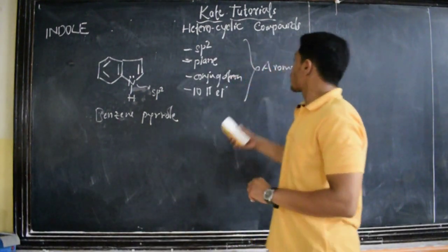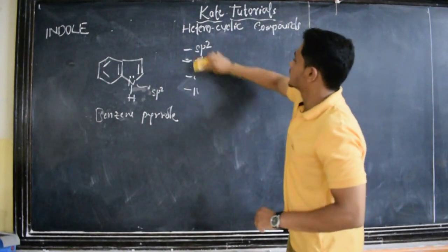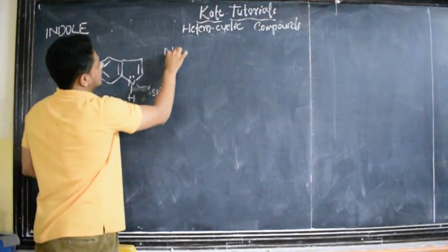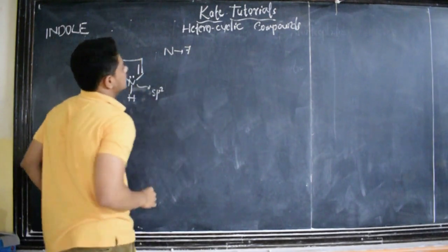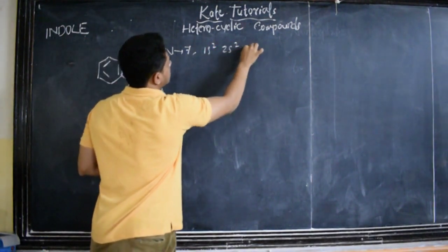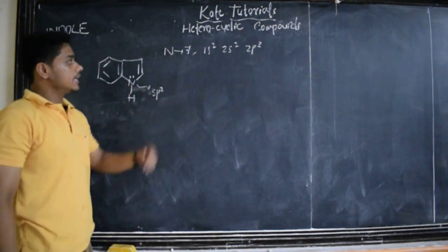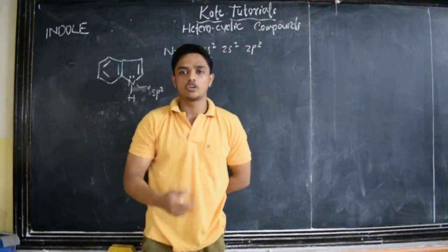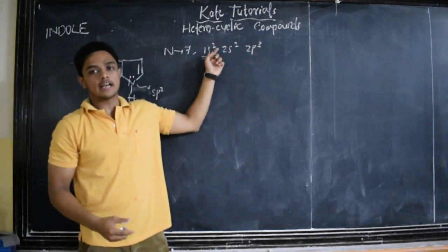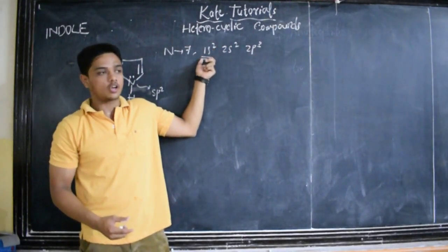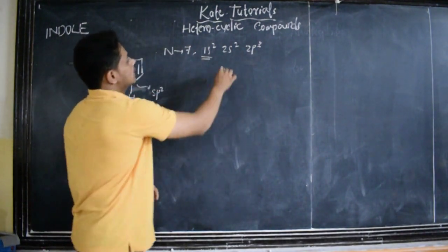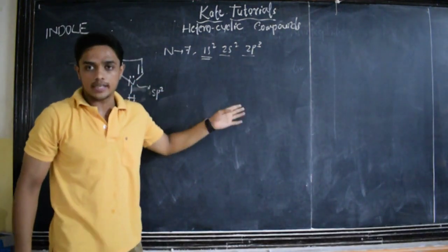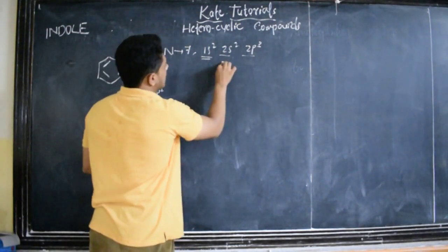Now we need to study the orbital structure of indole. What is the orbital structure of indole? As I told, the nitrogen is sp2 hybridized. The atomic number of nitrogen is 7, so it has got 1s2, 2s2, and 2p3 — totally 7. Since the 1s orbitals are near to the nucleus and the nucleus is positively charged, the nucleus will attract these electrons. So these inner electrons are not going to participate in any bond formation.